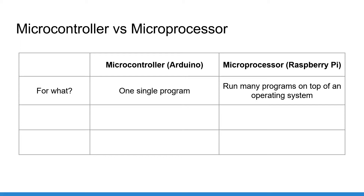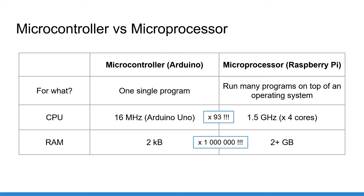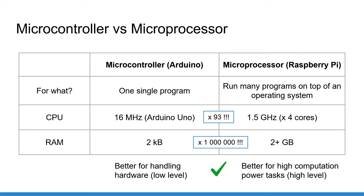If you compare the specs of the microcontroller on the Arduino Uno and the microprocessor on the Raspberry Pi 4, well there is a world of difference. With those specs and a few more details, you will see that the Arduino is better suited for controlling hardware components and the Raspberry Pi is better suited for software applications with more processing power.